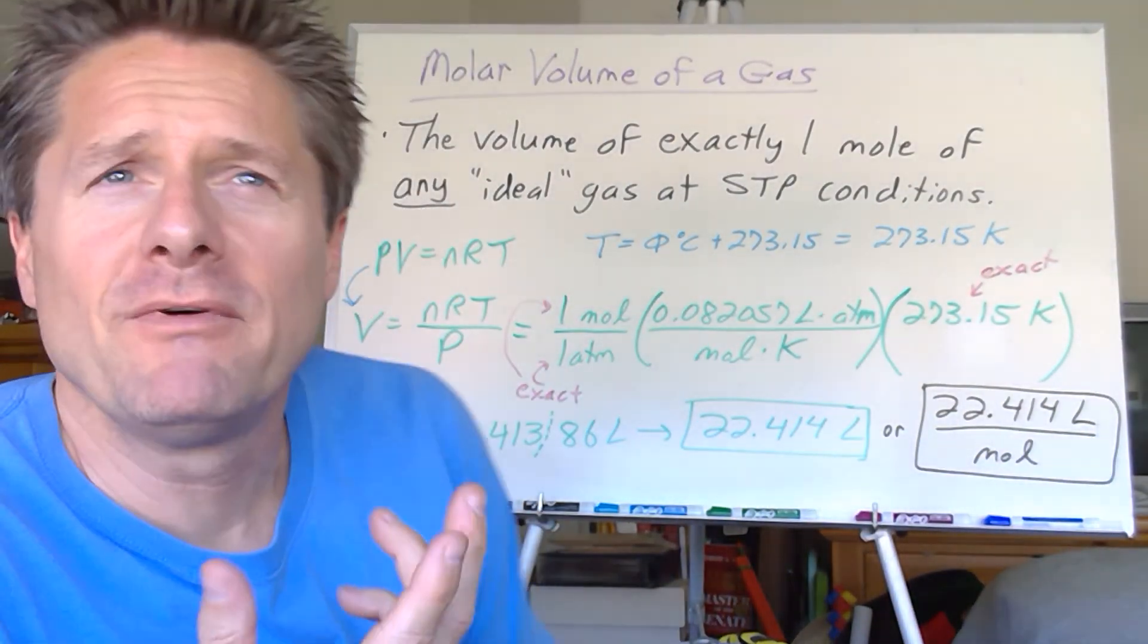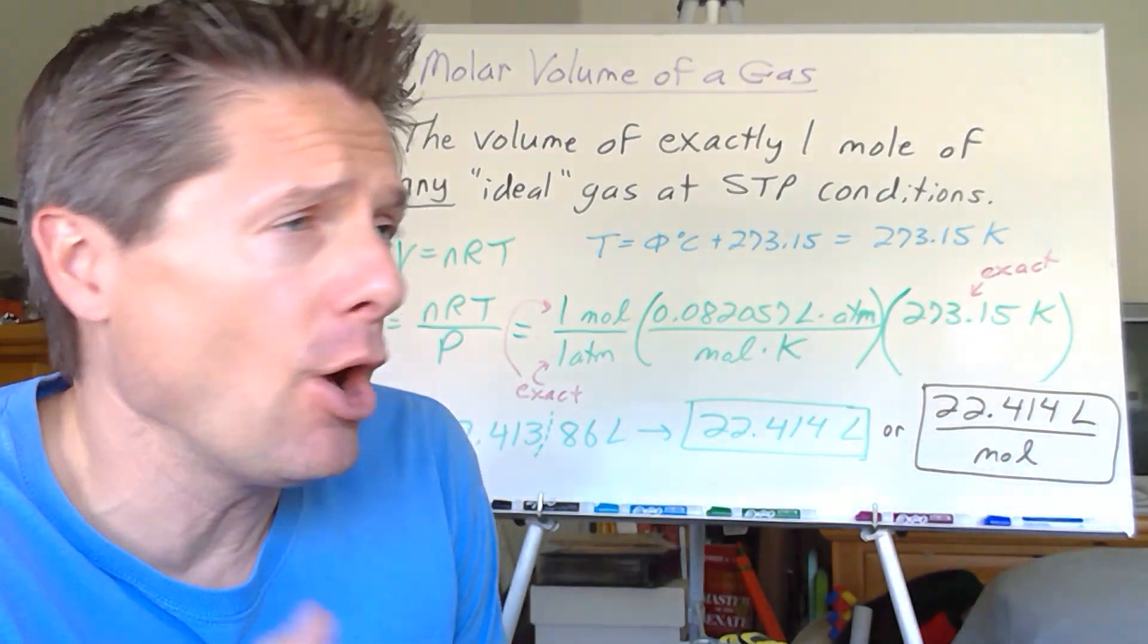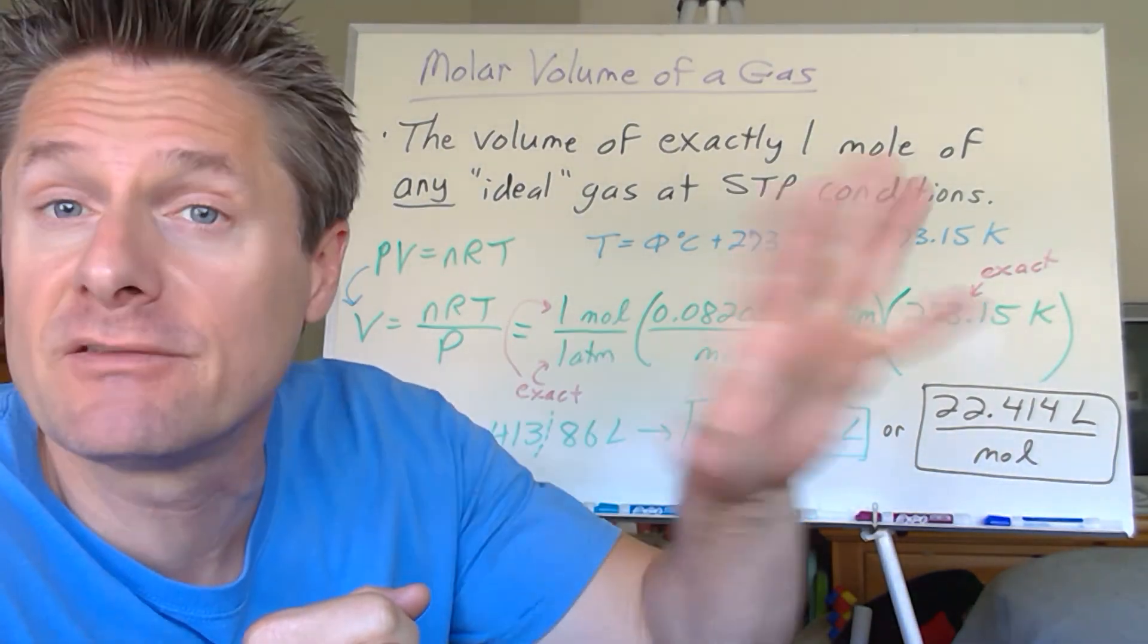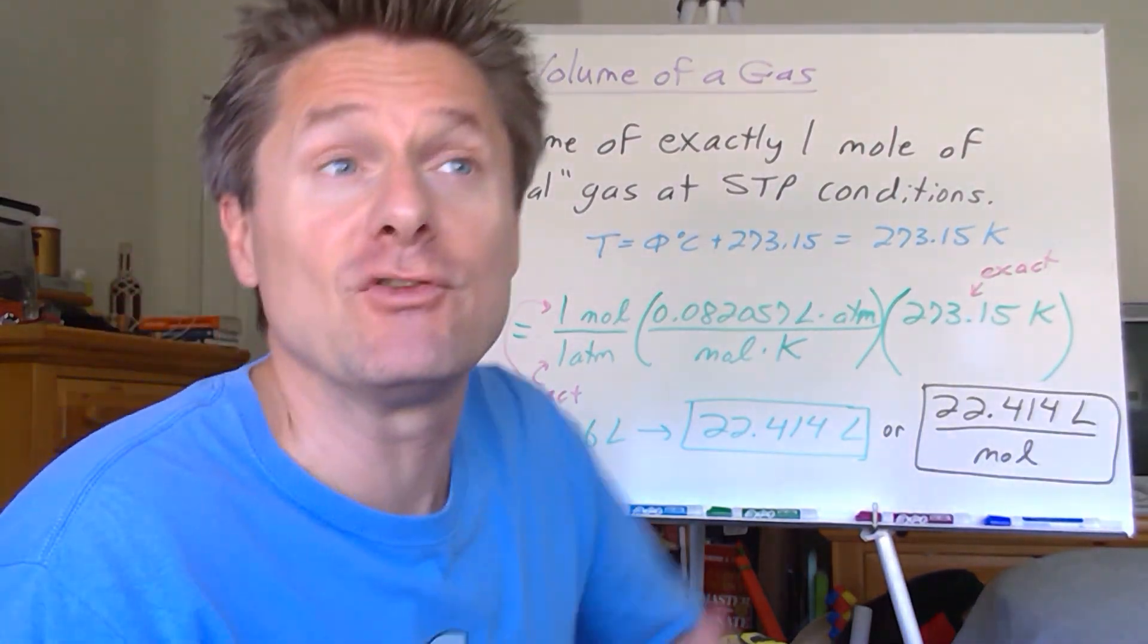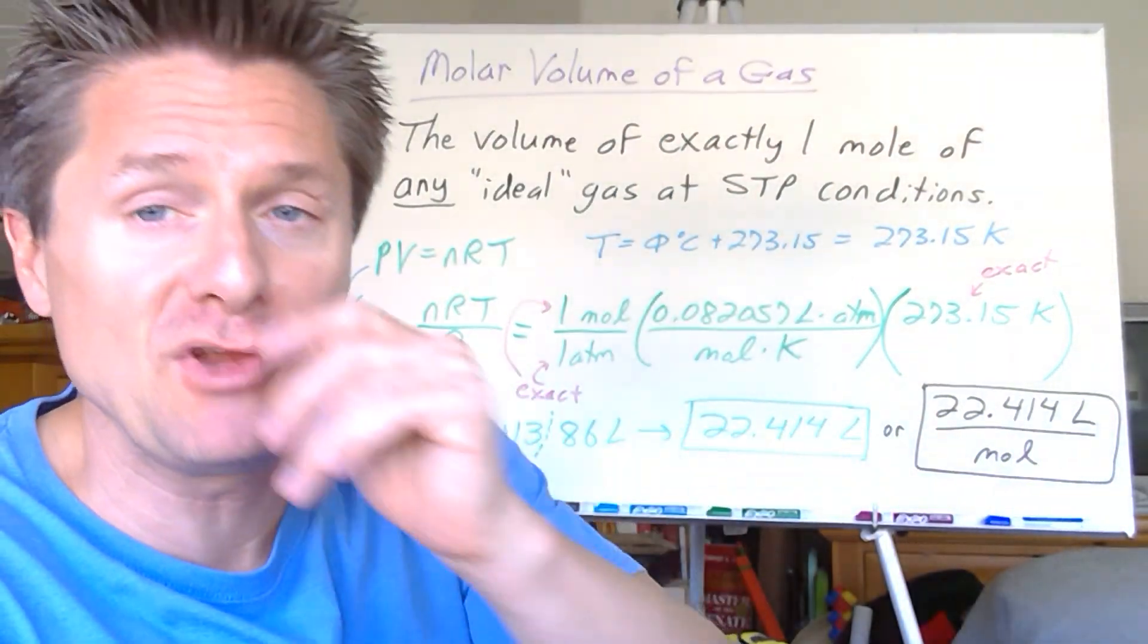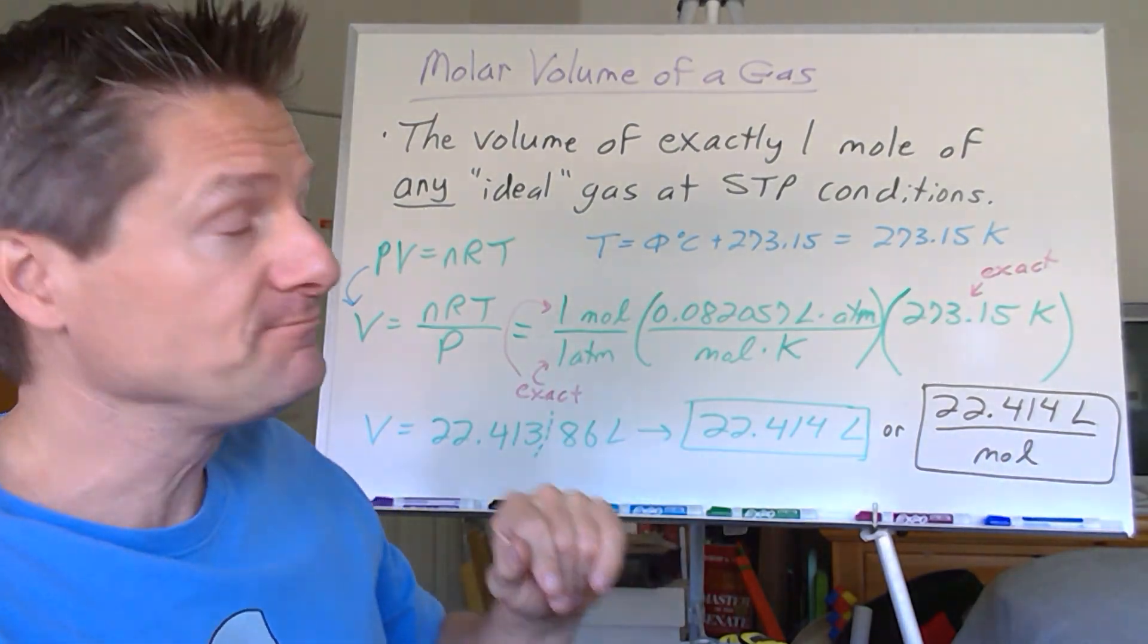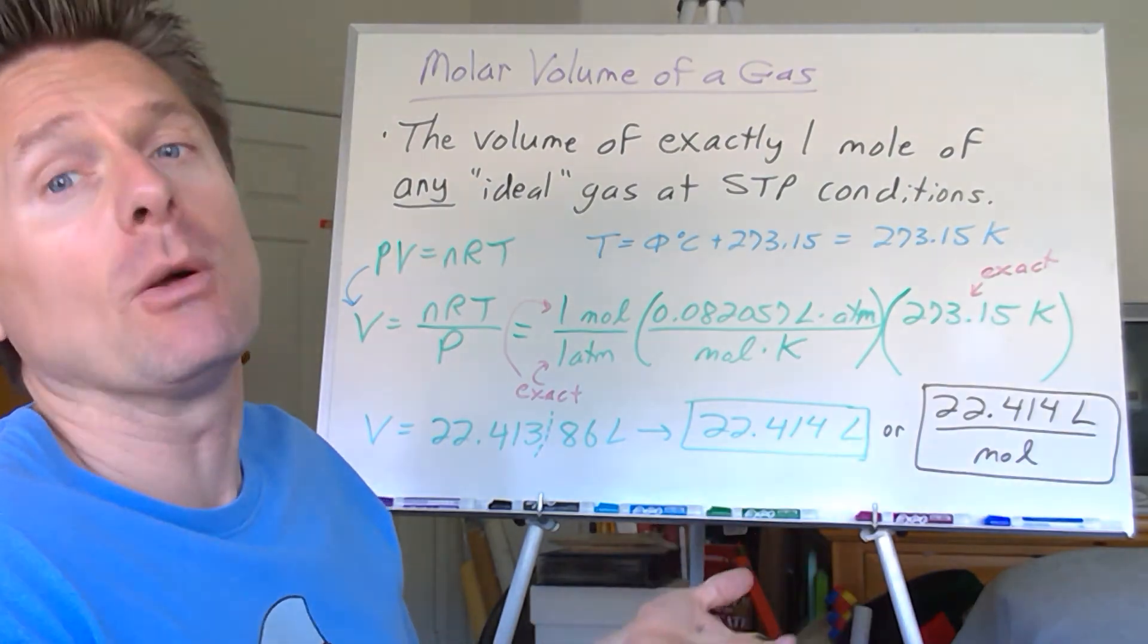So molar volume of a gas, you don't ever really have to use this. It's a nice shortcut. You can always just default to PV equals NRT. But if you want a nice little shortcut, if you've seen a problem at STP conditions, you can use this molar volume concept as a shortcut. It's up to you. You don't have to.